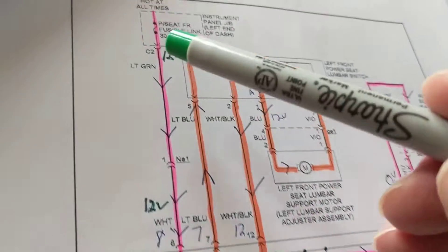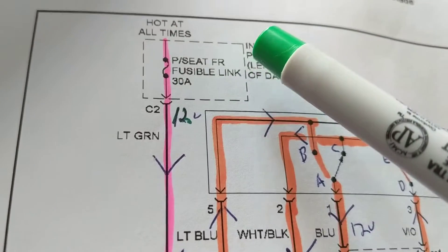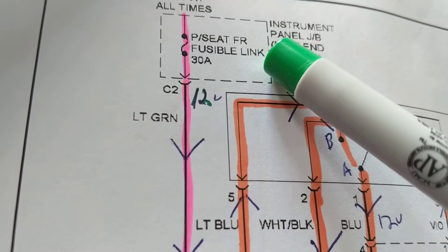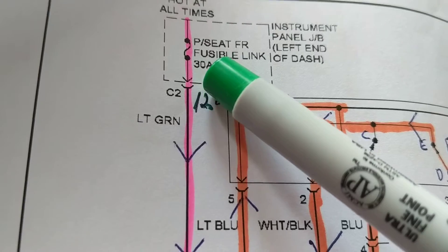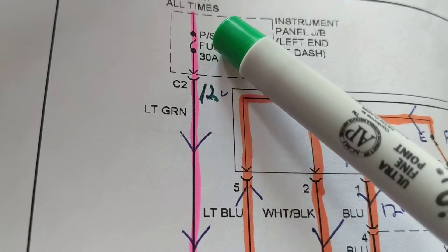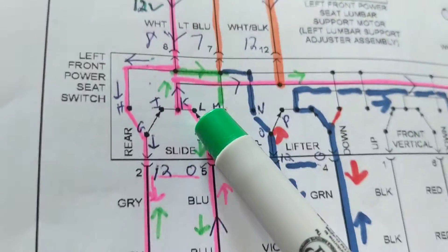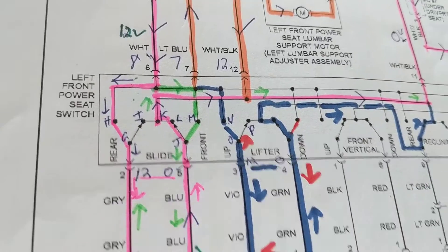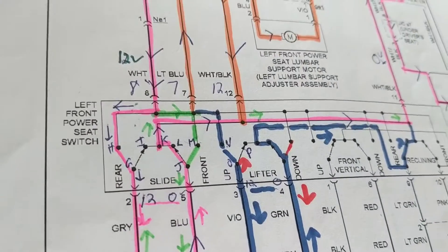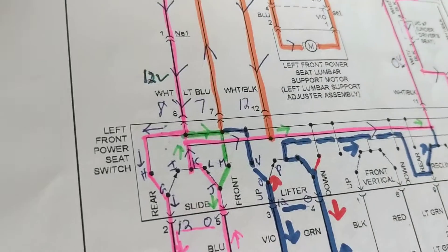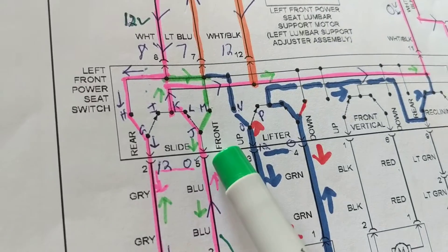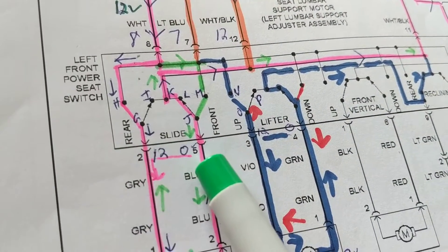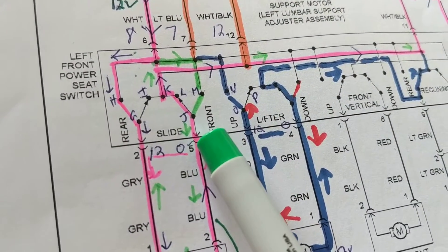What's involved? We always start from 12 volts over here. We start from the fusible link, which is actually a fuse — a 30 amp fuse, that's a lot. We follow the pink line. We have switches over here. Depending which you want, the switch will be closed. Let's say I want to slide to the rear.